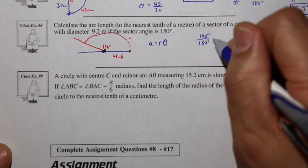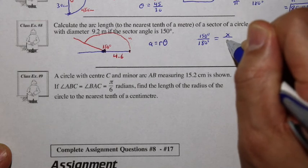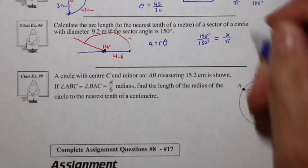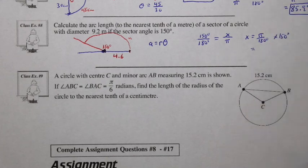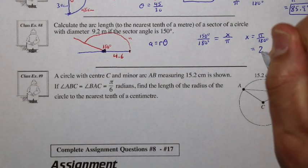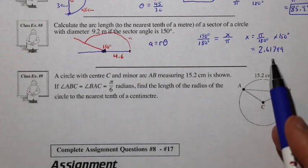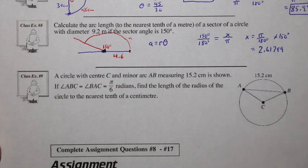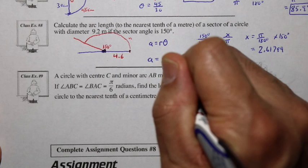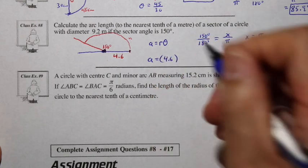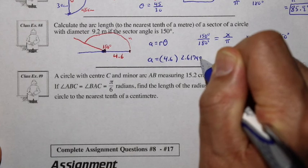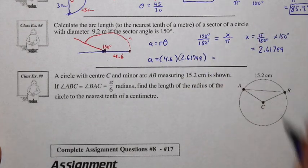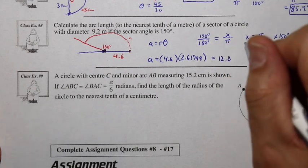Using proportional reasoning: 150 degrees over 180 equals x over pi, so x equals pi over 180 times 150, which is approximately 2.61799 radians. We keep all decimals until the end. The arc length a equals the radius 4.6 times 2.61799, and rounding to the nearest tenth gives 12.0 meters.